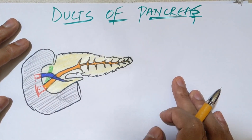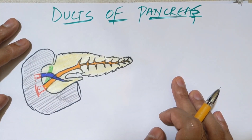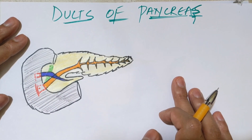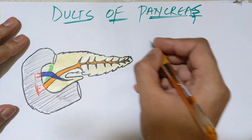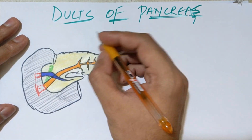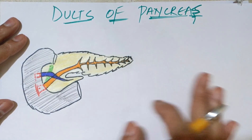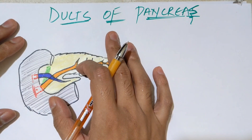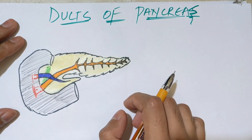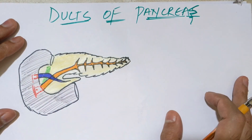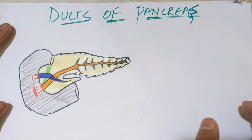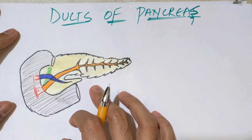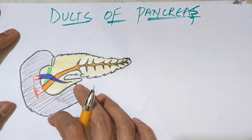Hello everyone, this is Suyesh here. In this video we'll be discussing the third part of the video for pancreas — specifically the topic of ducts of the pancreas and its blood supply. We have already discussed the first and second part, so watch those videos first. In those we discussed external structures and topography, and this part covers the internal structure.